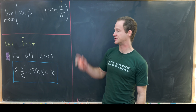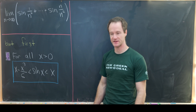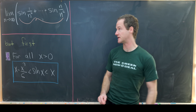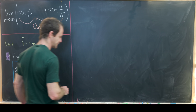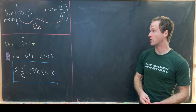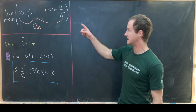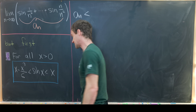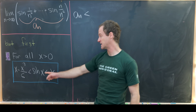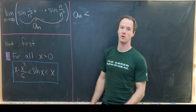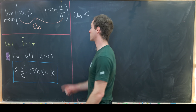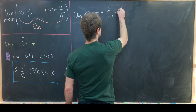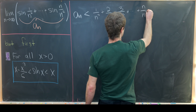Now that we've established this inequality, we're ready to jump into our limit. Let's call the expression inside the limit a sub n. Our inequality tells us that a sub n is less than the sum where we eliminate the sines — since sine of x is less than x, sine of 1 over n squared is less than 1 over n squared, and so on. So a sub n is less than 1 over n squared plus 2 over n squared plus 3 over n squared, ending at n over n squared.